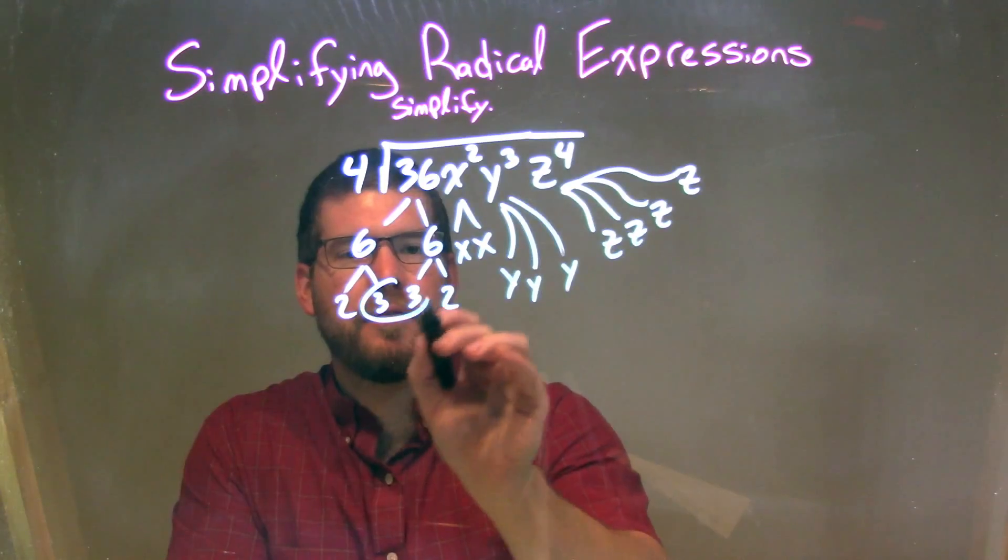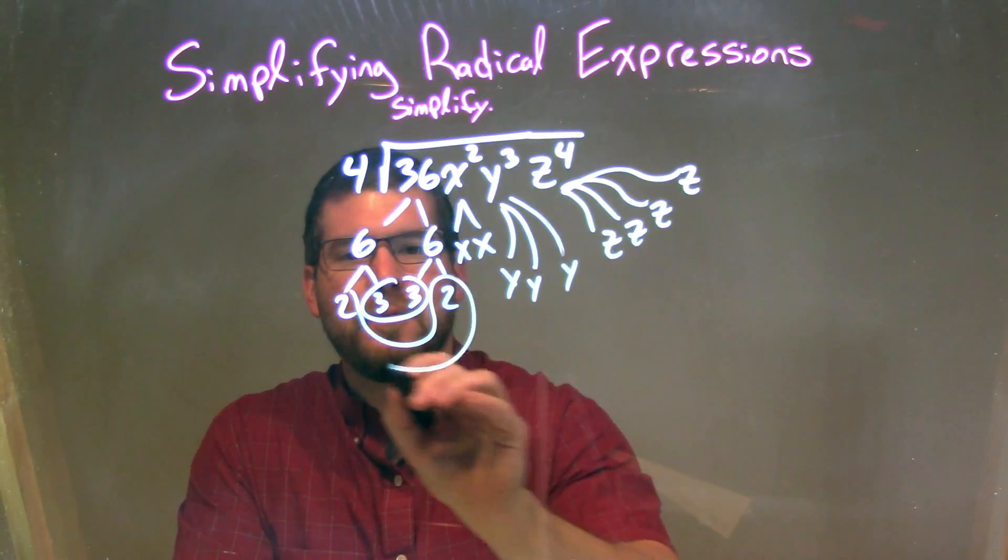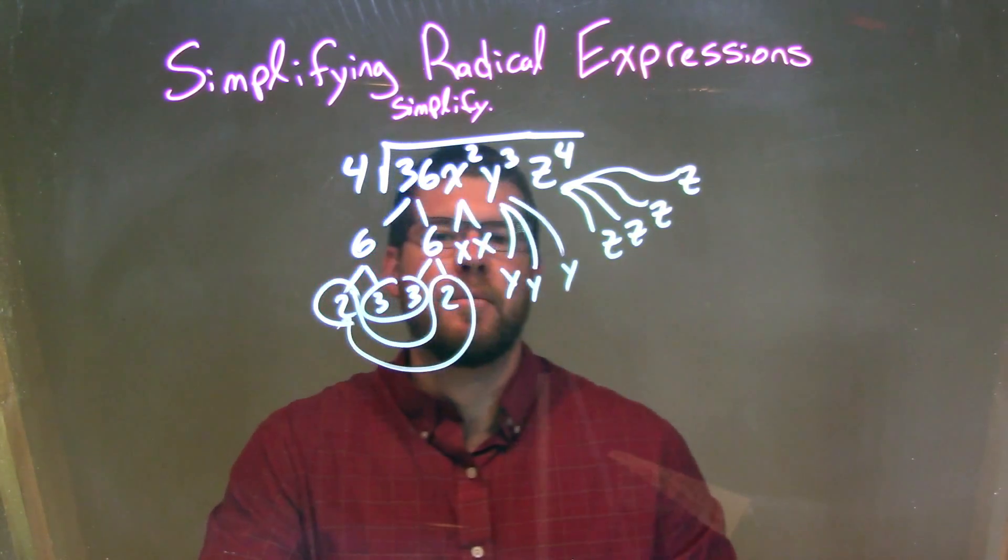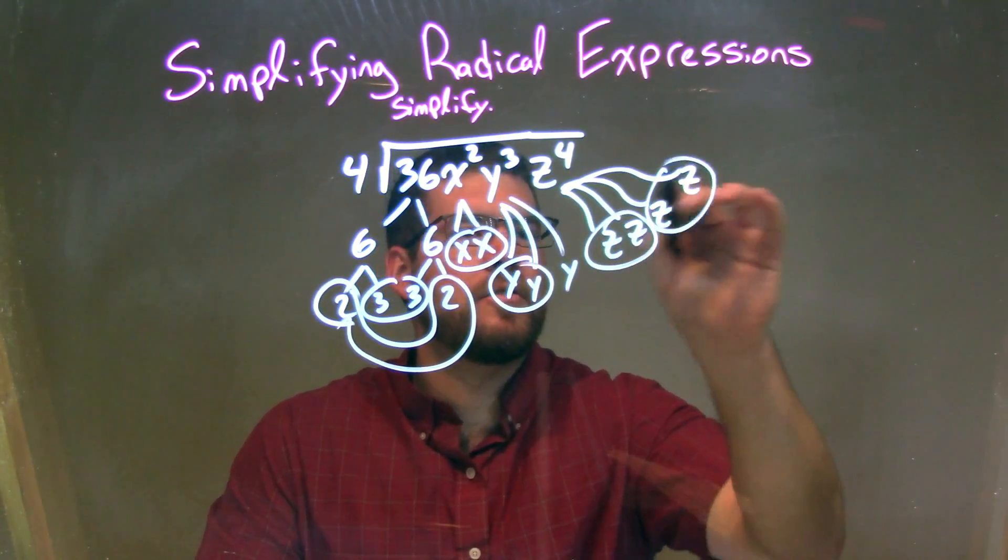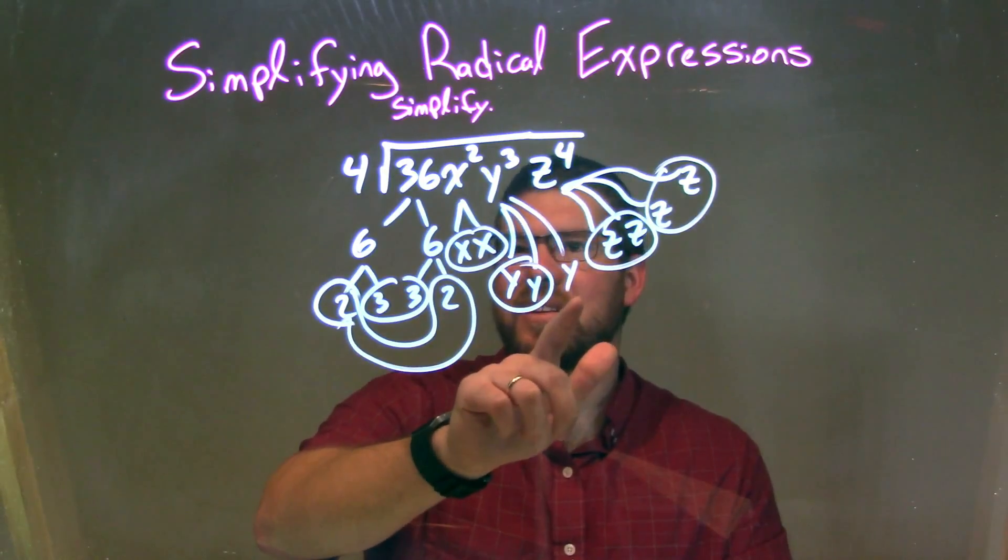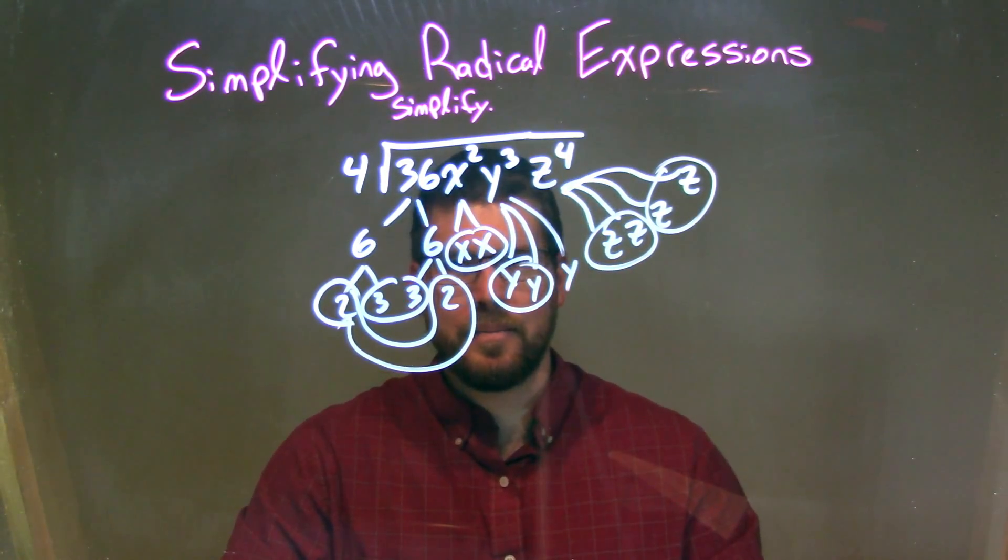So now let's go circle some pairs. I have a pair of threes, I have a pair of twos, there we go. A pair of twos right there. I have a pair of x's, I have one pair of y's, I have two pairs of z. The only thing left over that's not paired up is that single y right there.